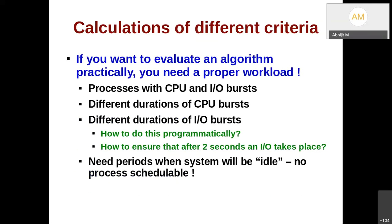Now let us discuss how to calculate these criteria. The results depend on the workload. If you just have one process doing CPU computation for 5 hours, you will have 100% CPU utilization with a non-preemptive algorithm, but your throughput will be one process in 3 hours — roughly 0.0001 processes per second. You cannot achieve everything at the same time. Irrespective of which algorithm you have, you always need a proper workload to evaluate it meaningfully.